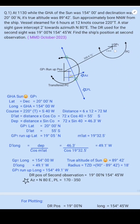GP1 — Geographical Position 1: latitude equals declination equals 20°00'N; longitude equals GHA equals 154°00'W.